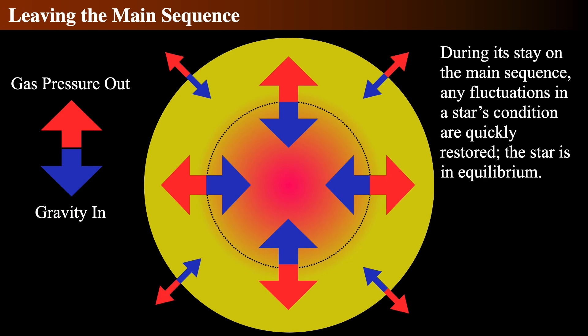When the star starts to run out of hydrogen, that's when it leaves the main sequence. Before then, during the main sequence life, two things are always in balance. One, there's a gravitational pull that's pulling the star together, which is balanced by the outward pressure due to the heat coming from the center.